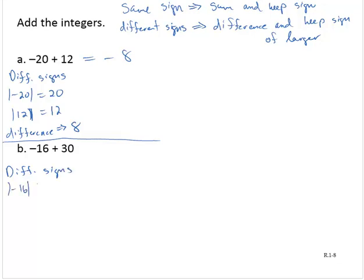The absolute value of negative 16 is 16. The absolute value of 30 is 30. The difference is 14. Which is larger? 30 is larger than 16. So I keep the sign of the 30 - positive 14.